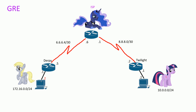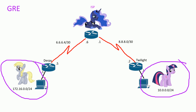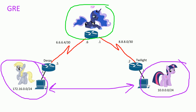Twilight and Derpy want to communicate with each other. Twilight has a private network of 10.0.0.0/24 and Derpy has a private network of 172.16.0.0. They both want to communicate because they have some awesome servers and cool thingamajiggers. The problem is they're connected to the internet but they can't do any routing to private networks. Luna is the ISP for the day.